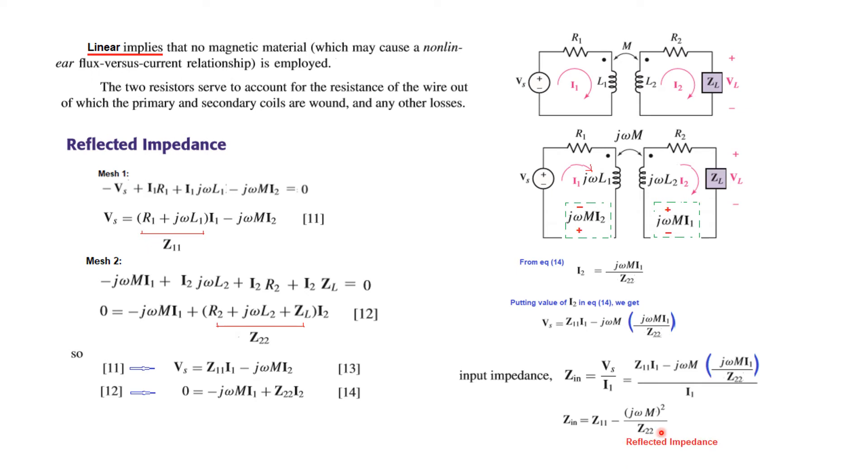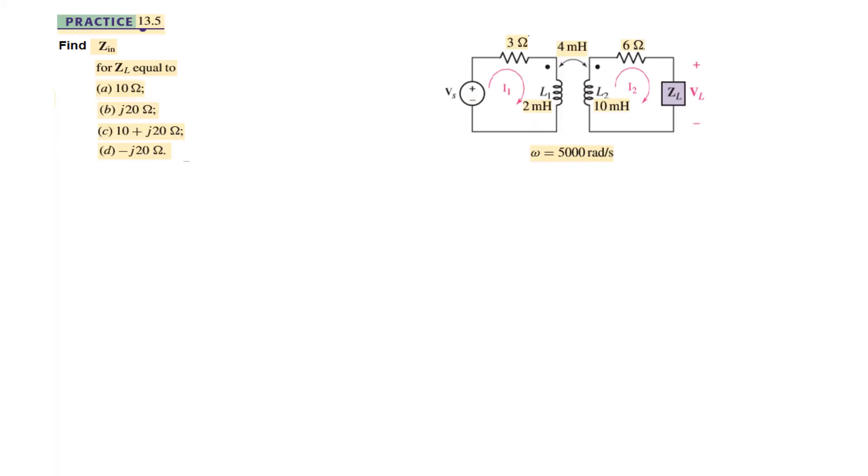This right hand side term is the reflected impedance because something has been added or subtracted with the primary impedance Z11 of the primary side.